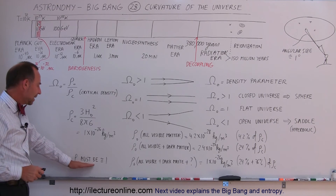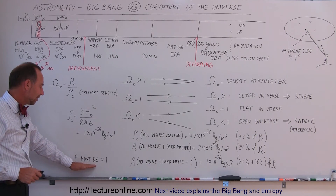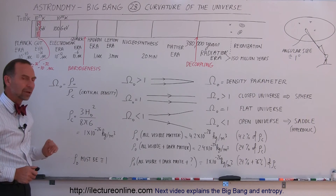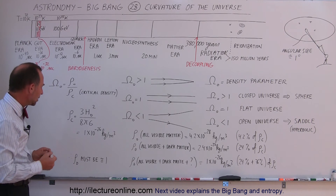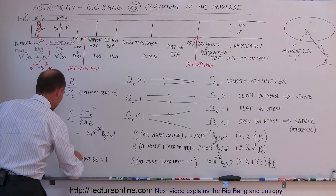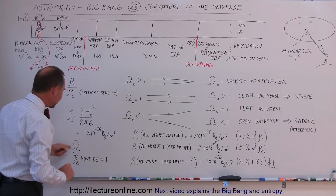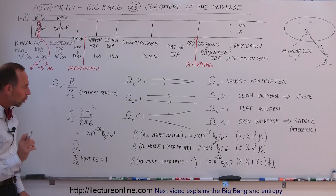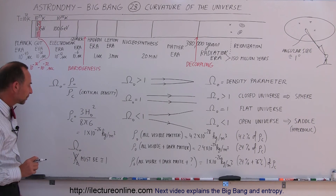Why is the density of the universe close to the critical density? Why is the density parameter so close to one?